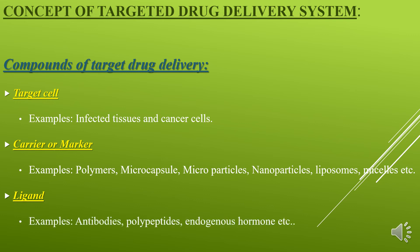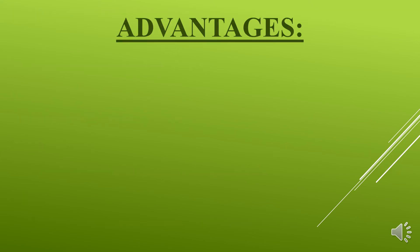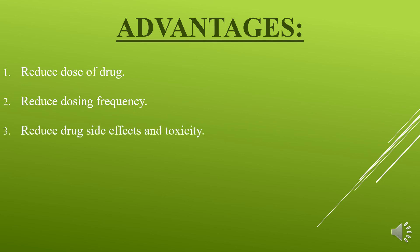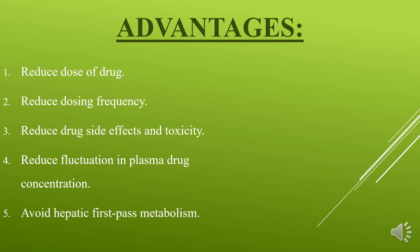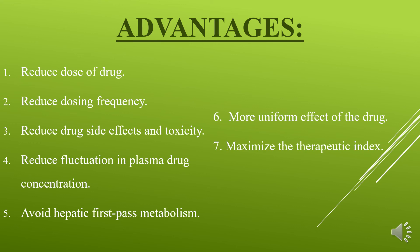Examples of ligands include antibodies, polypeptides, endogenous hormones, etc. Advantages of targeted drug delivery system: first, reduce dose of drug; second, reduce dosing frequency; third, reduce drug side effects and toxicity; fourth, reduce fluctuation in plasma drug concentration; fifth, avoid hepatic first-pass metabolism; sixth, more uniform effect of the drug; seventh, maximize the therapeutic index; eighth, improve drug bioavailability.